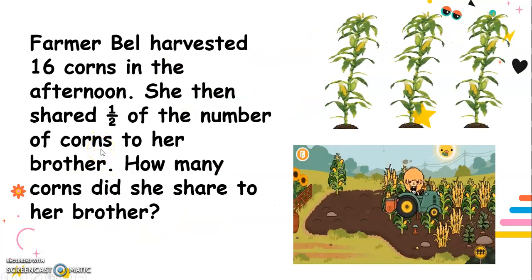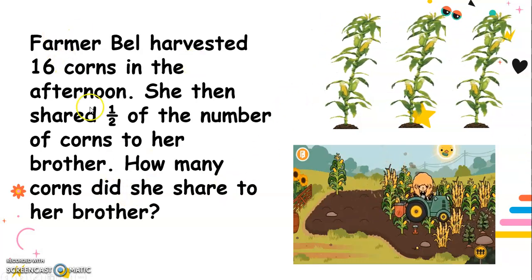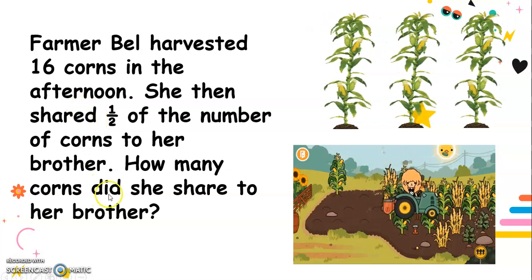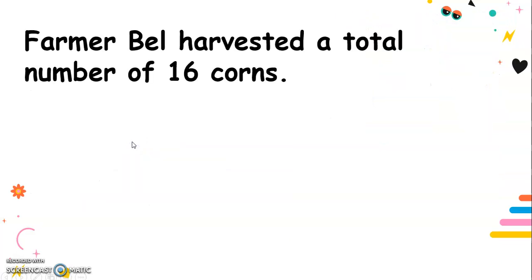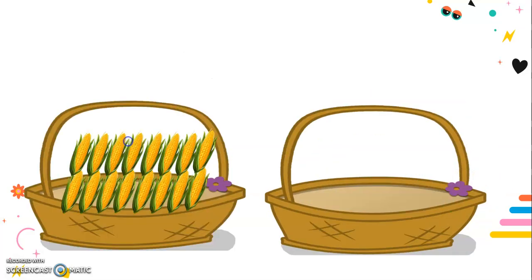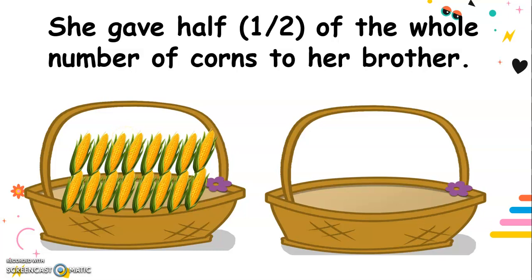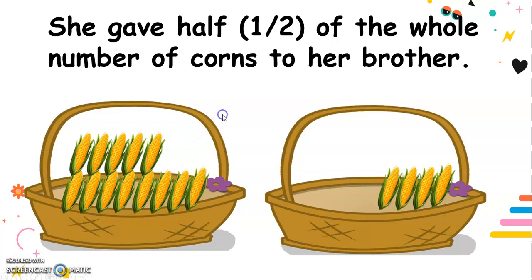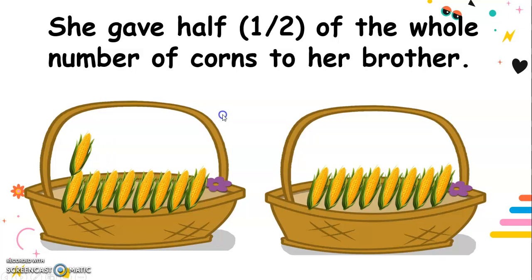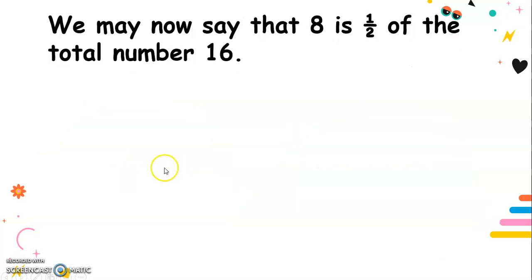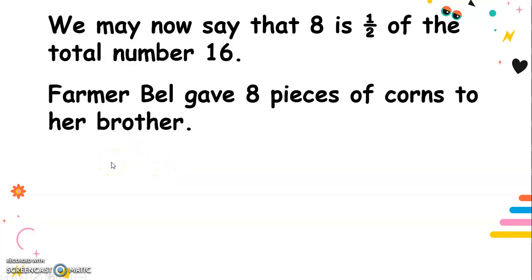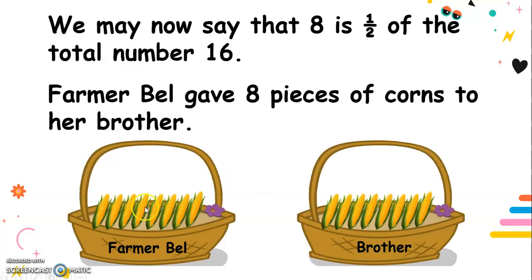Another example: Farmer Bell harvested 16 corns in the afternoon. She then shared one half of the total number of corns to her brother. How many corns did she share? Farmer Bell harvested a total of 16 corns. She distributed the corns into two equal parts, giving half to her brother — she counted out eight corns. So she gave eight corns to her brother, and kept eight for herself. We may now say that eight is one half of the total number 16. Farmer Bell gave eight pieces of corn to her brother — eight for her brother and eight left for Farmer Bell.